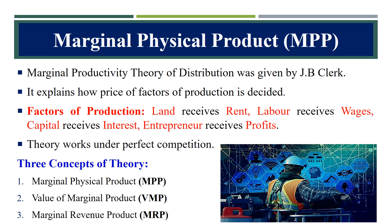As we know, factors of production are mainly the land which receives the rent, labor receives the wages, the capital receives the interest, and the entrepreneur receives the profits. This theory works under perfect competition.